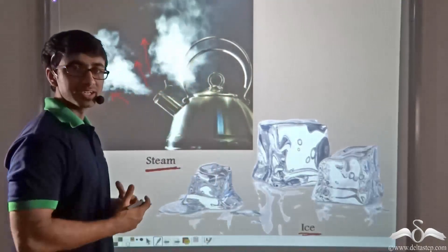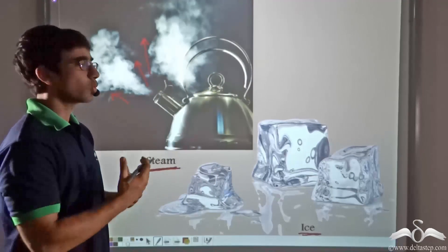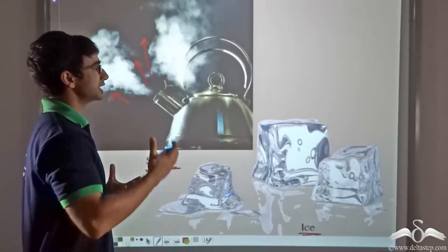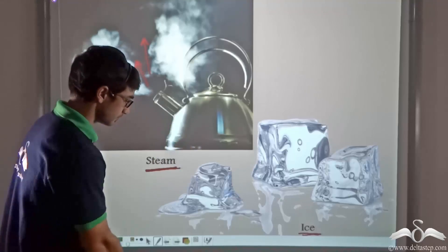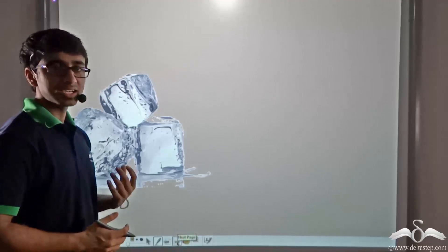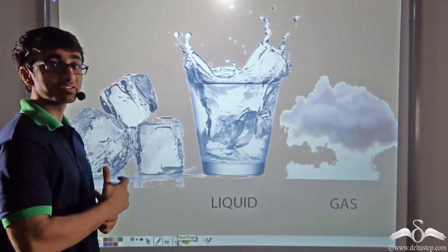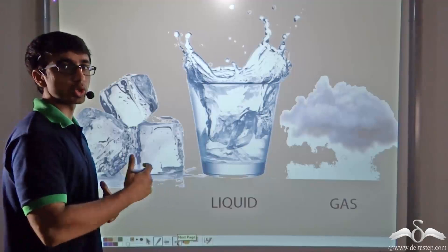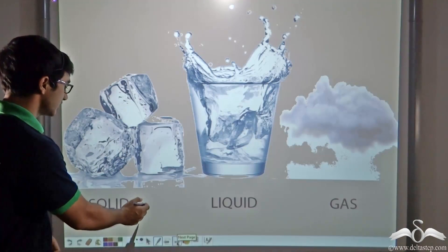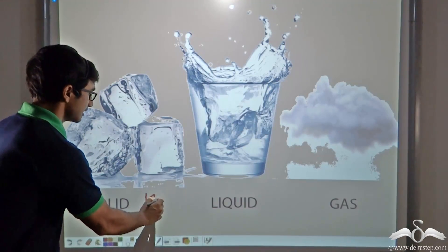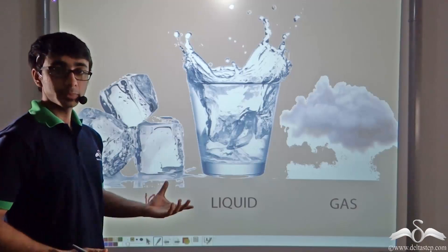Now it is evident that both of them are water. So why do you think they are so different from one another? They are different because they are different states of water. In the solid state, water is known as ice.